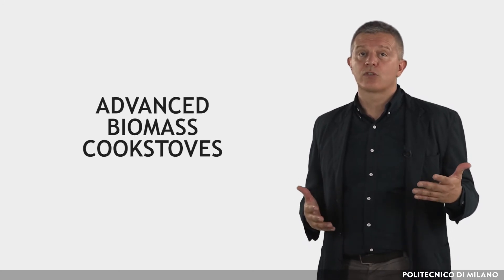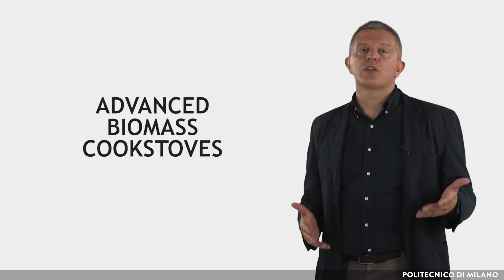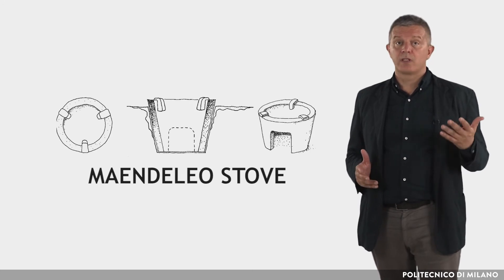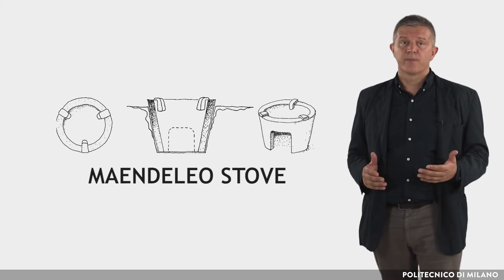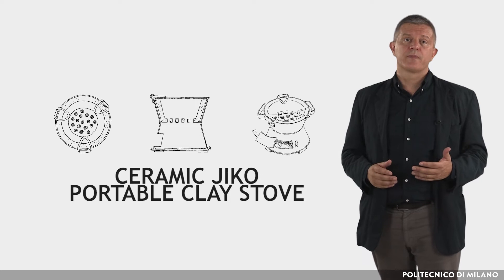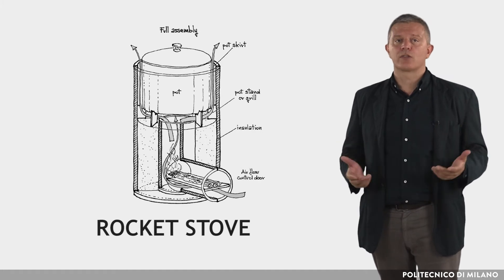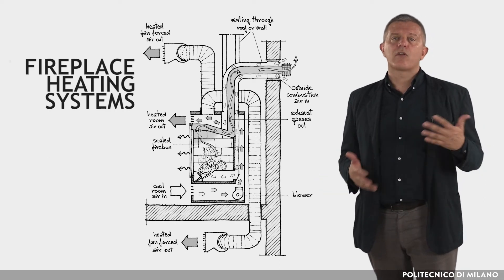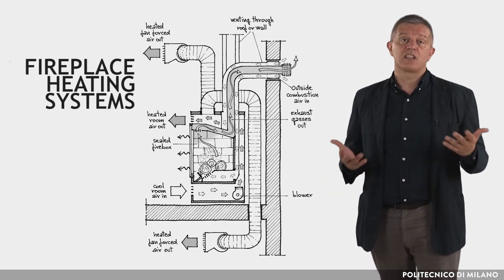Concerning more specifically cooking purposes, it is estimated that the new generation of advanced biomass cook stoves would reduce CO2 emissions and fuel consumption by up to 50% and even more. From the simplest to the most innovative, we can mention the simple Mendeleo stove, the ceramic Gico portable clay stove, the so-called rocket stove, the rocket Lorena stove, and more or less complex fireplace heating systems.